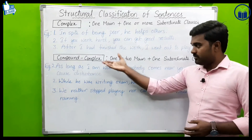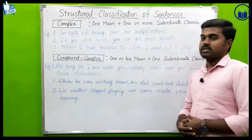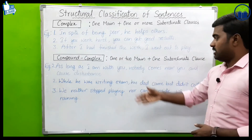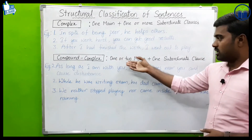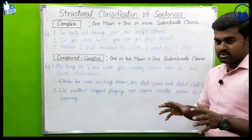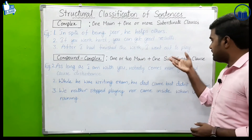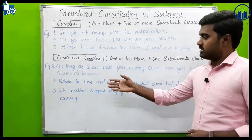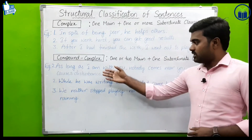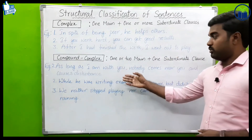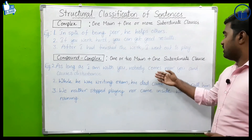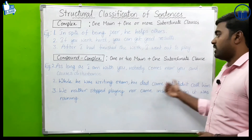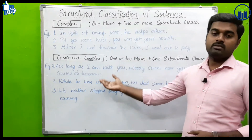Now compound-complex sentence examples. It consists of two or more main clauses and at least one subordinate clause. First example: 'As long as I am with you, nobody comes near you and causes disturbance.' Here 'as long as I am with you' is the subordinate clause, and 'nobody comes near you' and 'causes disturbance' form the main clauses.